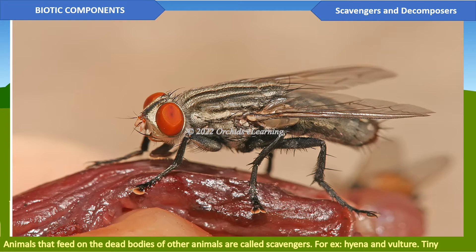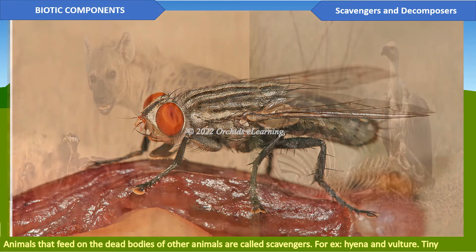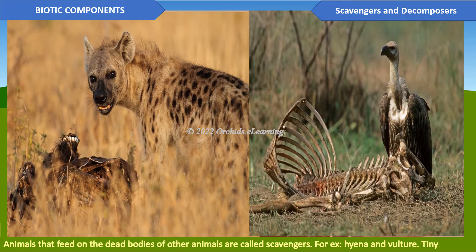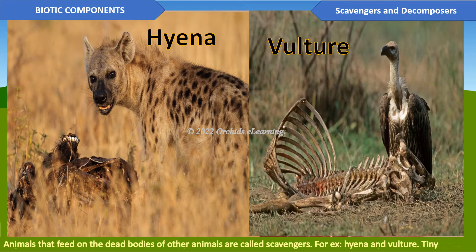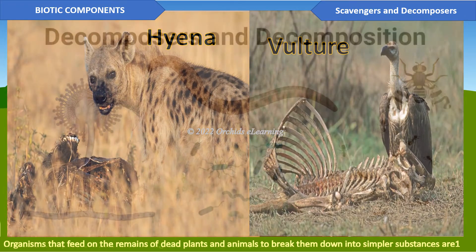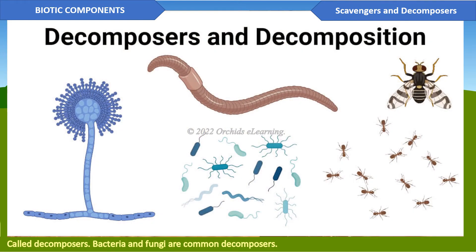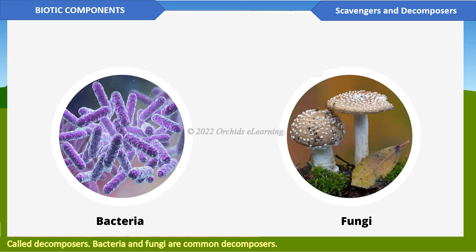Animals that feed on the dead bodies of other animals are called scavengers — for example, hyenas and vultures. Tiny organisms that feed on the remains of dead plants and animals to break them down into simpler substances are called decomposers. Bacteria and fungi are common decomposers.